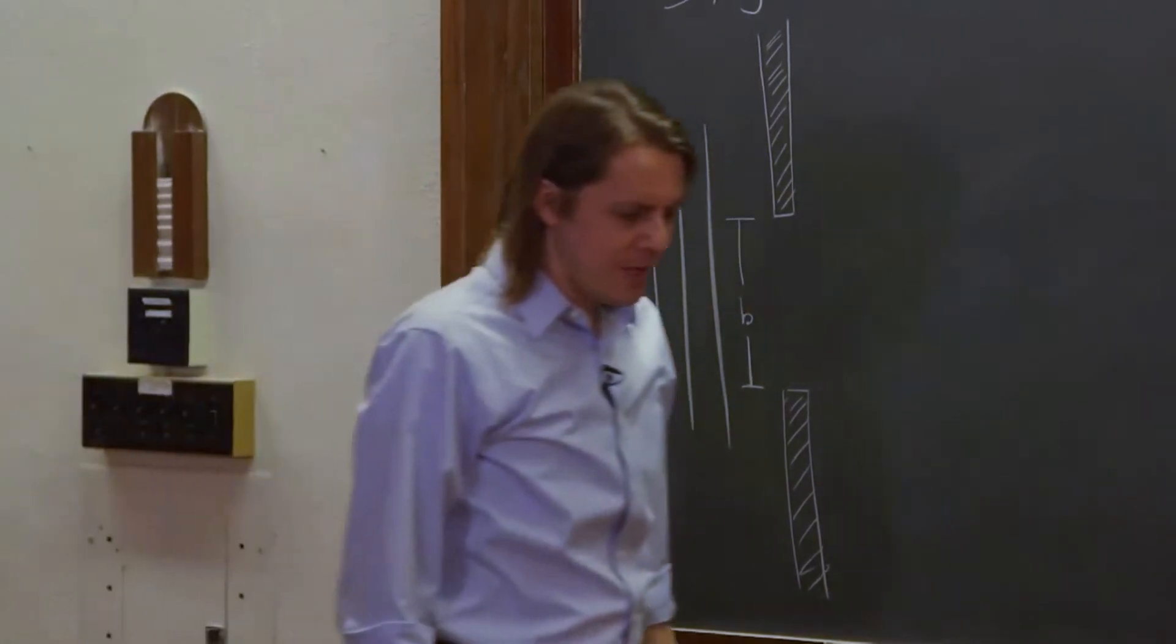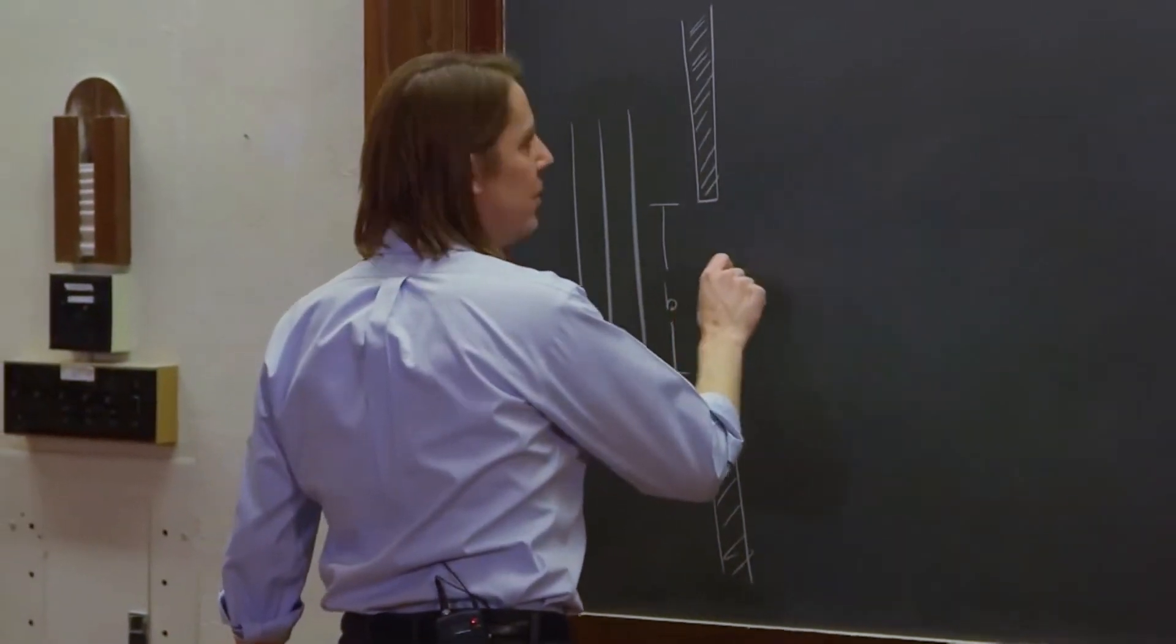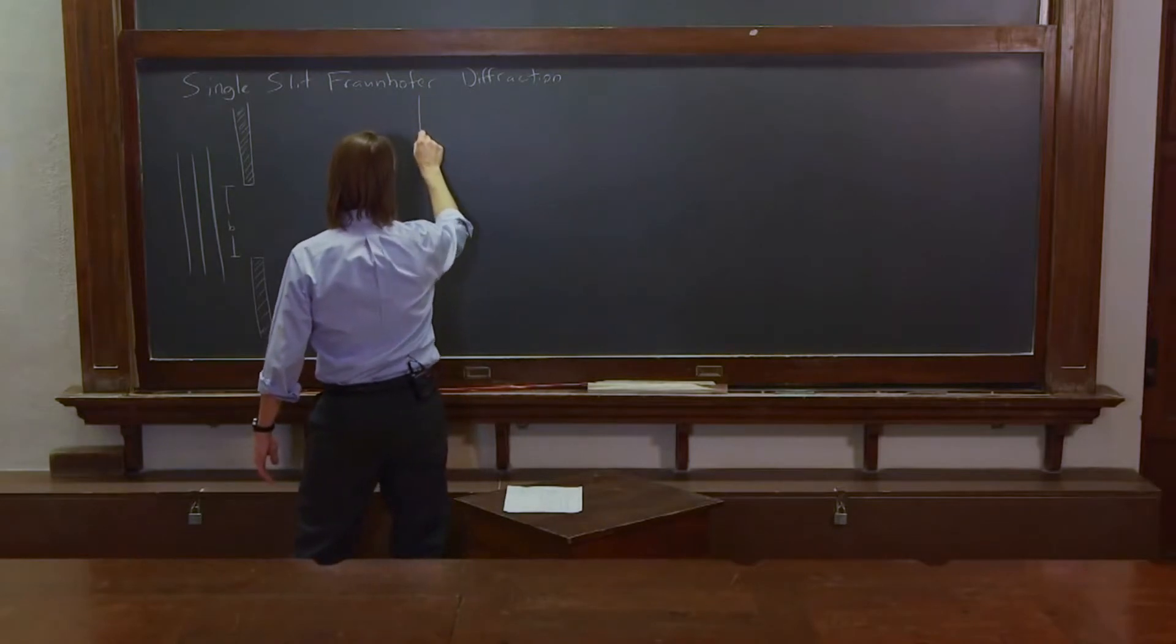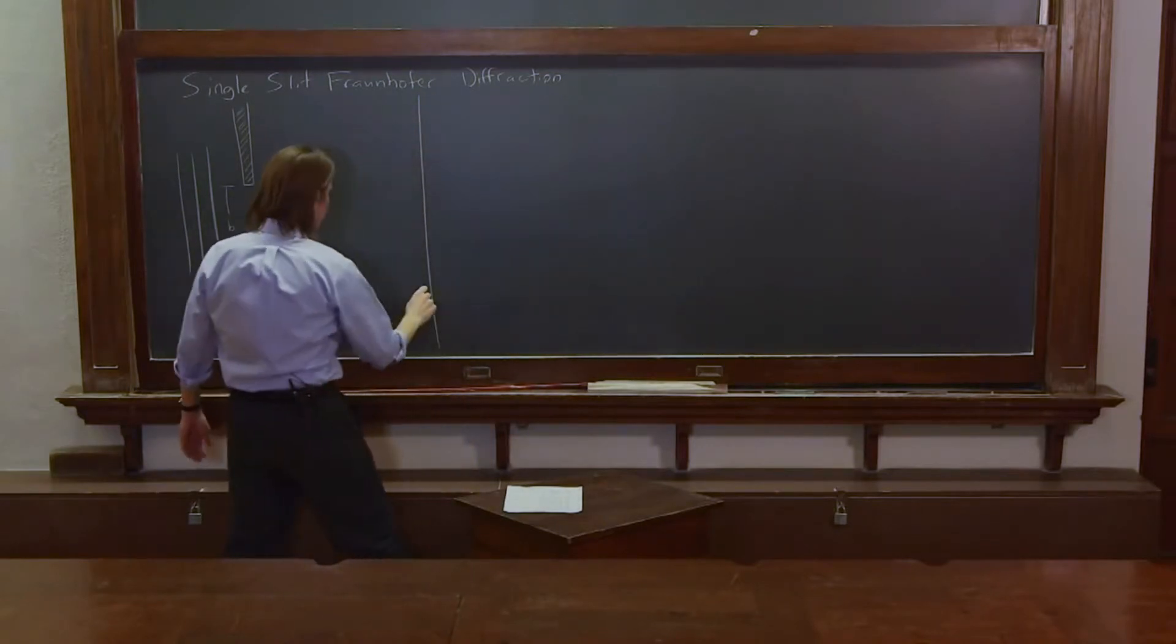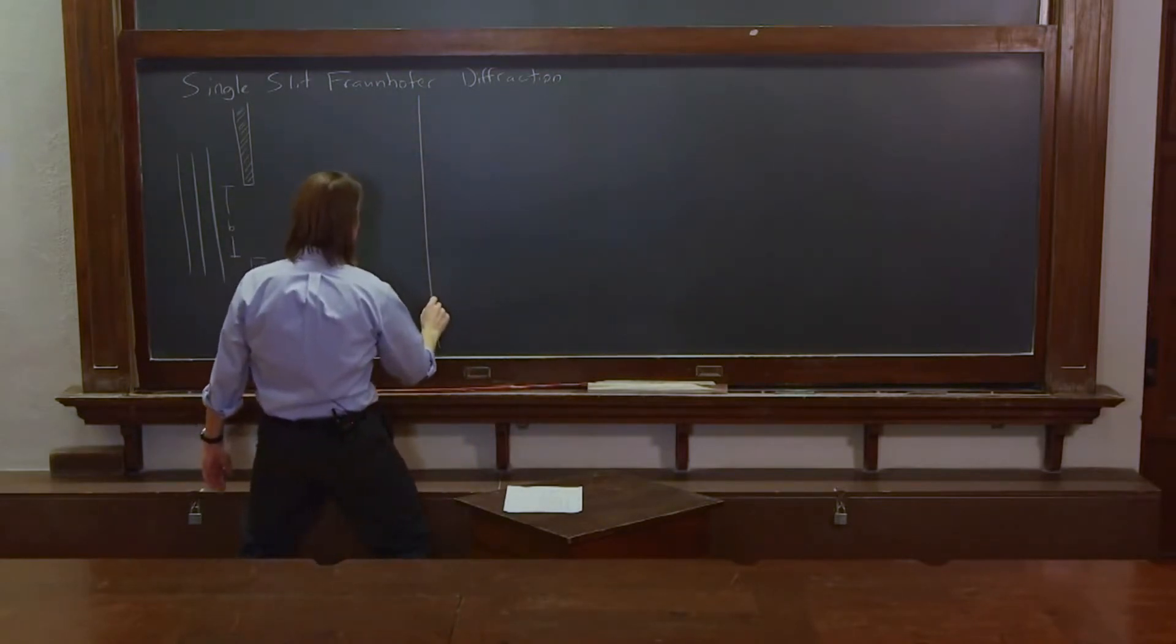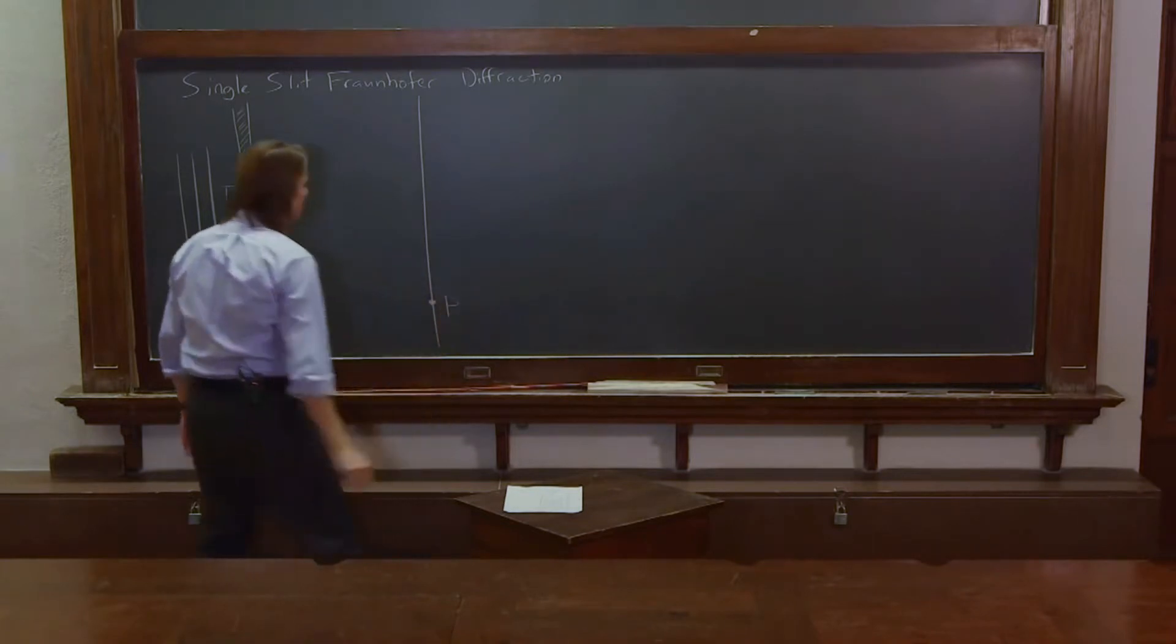The slit is coming out like that. Anyway, slit of width B. And we're going to think about what does the light do at a screen out here. And as always, we'll focus on some point P on the screen.